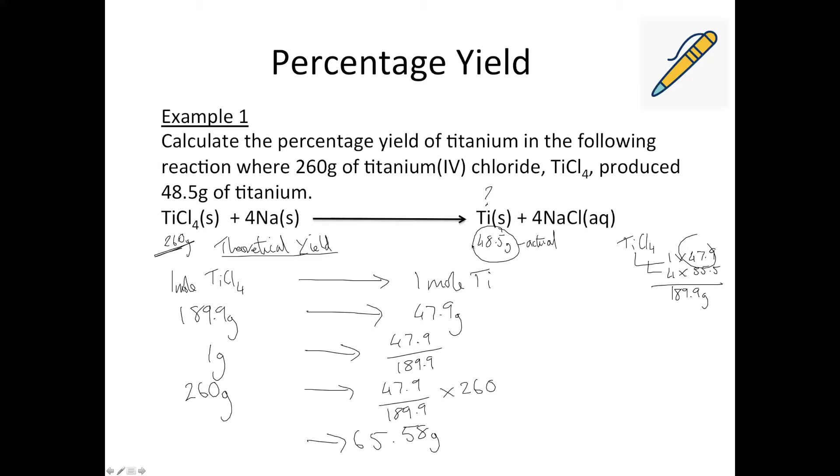So the theoretical yield you calculate from the balanced equation. So now we have our actual yield, we have our theoretical yield, so we can use the percentage yield equation. So the percentage yield is the actual, over the theoretical, times 100. So that's 48.5 over 65.58 times by 100. So put that into your calculators. That gives us a yield of 73.96%, so you could round that to 74% if you want to. I like to do two decimal places just as a personal preference. If you end up with a percentage yield over 100%, you've done something wrong. Or you're a wizard, because it's not really possible.